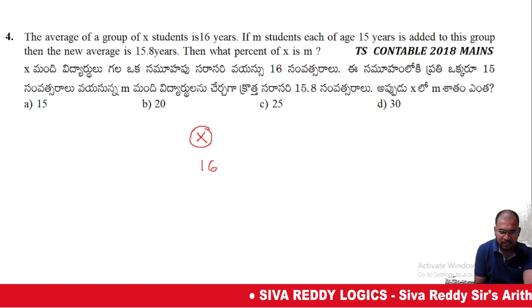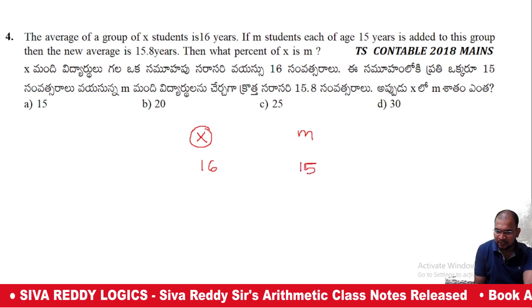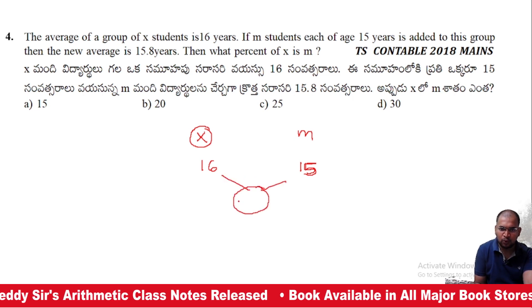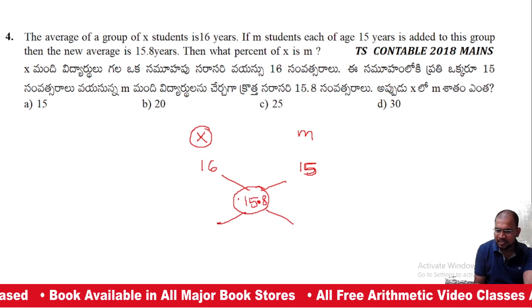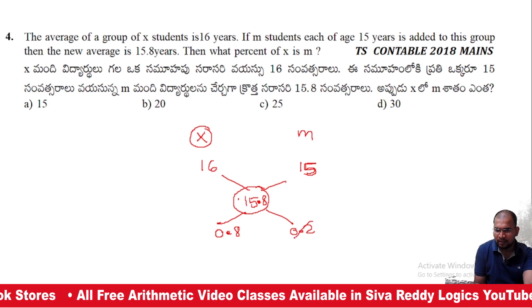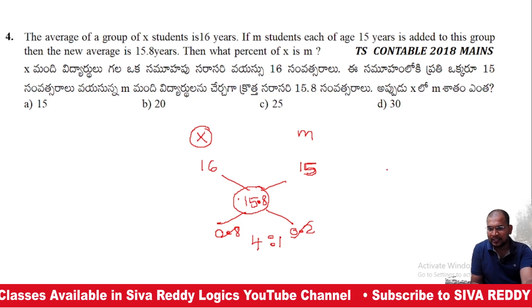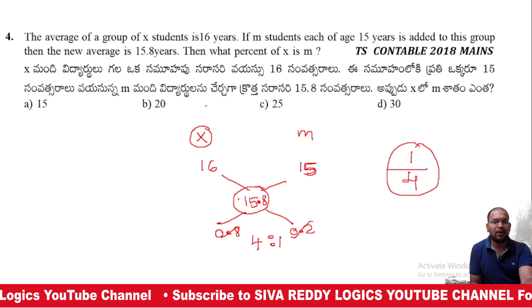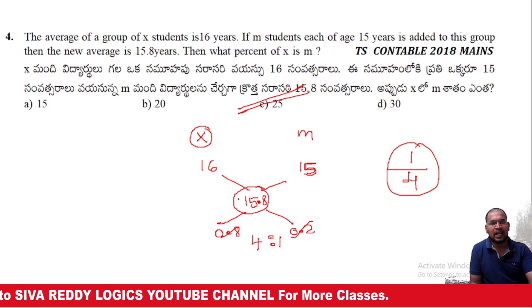The average of X students is 16, M students' average is 15, and the combined average is 15.8. The difference is 0.8 and 0.2, giving a ratio of 4 is to 1. So X corresponds to 4 and M corresponds to 1. Therefore M is 1 by 4 of X, which is 25 percentage. The answer is option C.